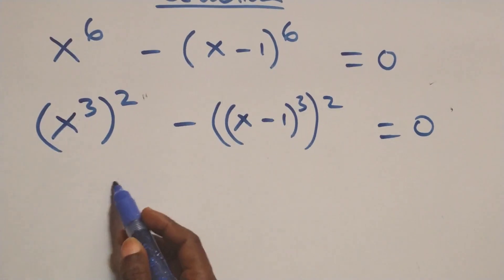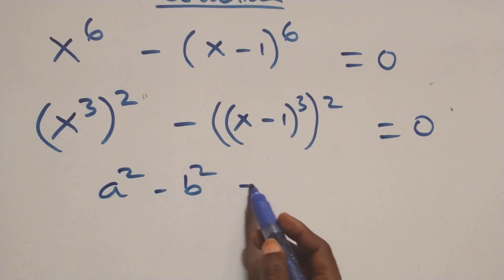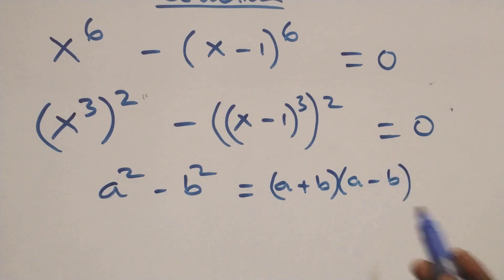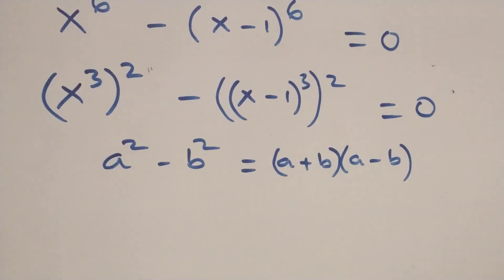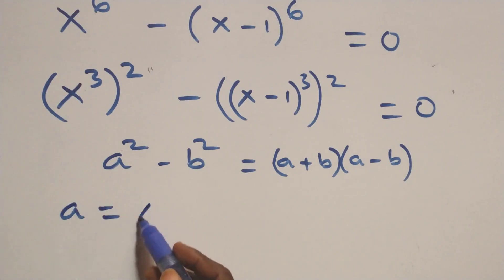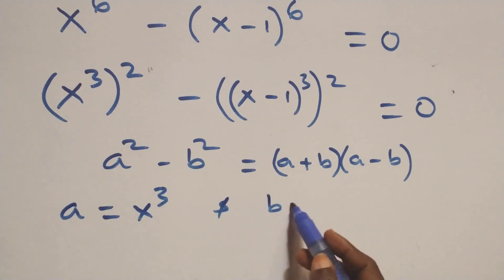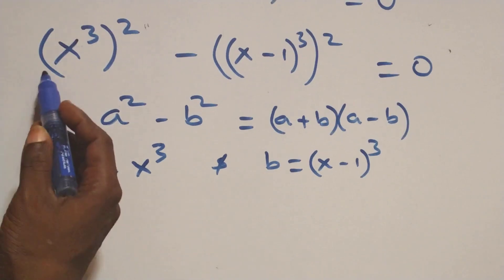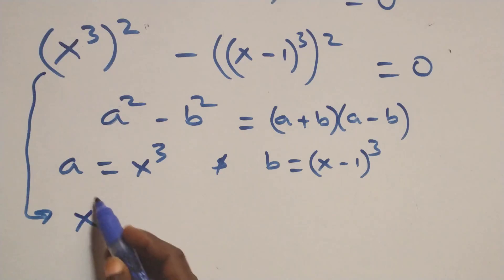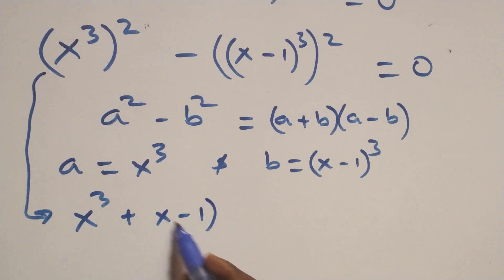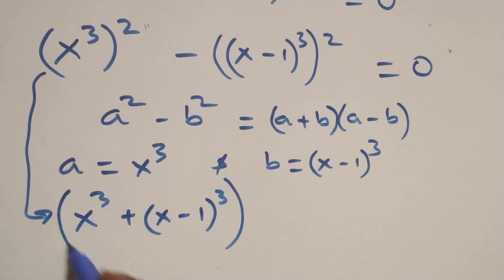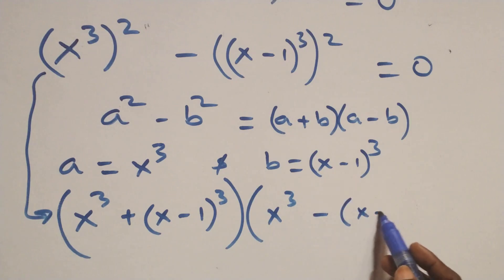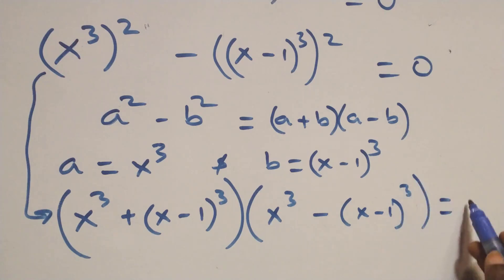This follows the identity a squared minus b squared, which equals (a plus b) into (a minus b). Here a stands as x raised to power 3, and b stands as (x minus 1) raised to power 3. So this becomes: (x³ + (x−1)³) times (x³ − (x−1)³) equals 0.